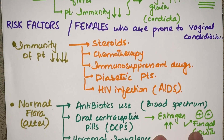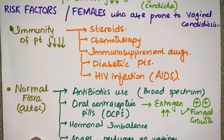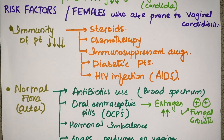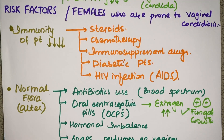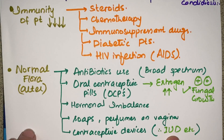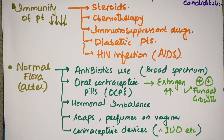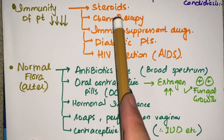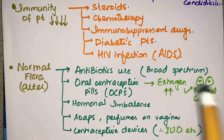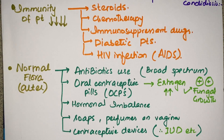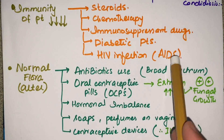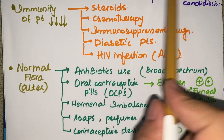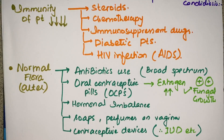Now the risk factors — to learn them, there is a simple mnemonic. An infection will occur if immunity is weak or if the normal flora is disturbed. Factors that decrease immunity include drugs like steroids, chemotherapy, and immunosuppressant drugs. Diabetic patients or HIV infection (AIDS) also decrease immunity and make the female more prone to vaginal candidiasis.